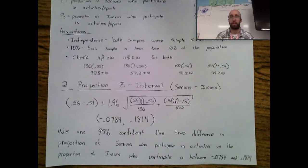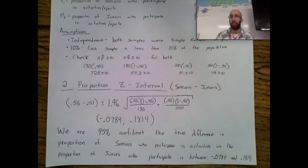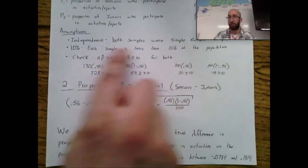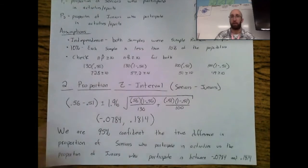So that was a full two-proportion Z interval problem. You go through PANIC, and a lot of procedures are doubled up compared to a one-proportion interval. Be careful on that third assumption, and be careful with the formula because it can get quite messy.